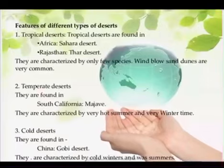Tropical deserts are found in Africa, examples being the Sahara Desert and the Rajasthan desert. They are characterized by only a few species, with wind-blown sand dunes very common. Among temperate deserts, an example is the Mojave Desert of South California, characterized by very hot summers and very cold winters. The cold deserts, such as the Gobi Desert of China, are characterized by cold winters and warm summers.